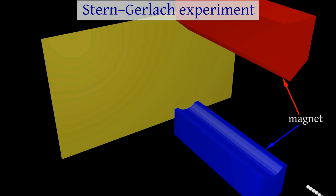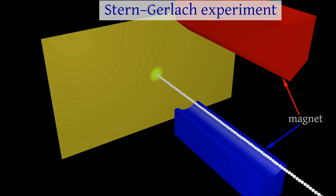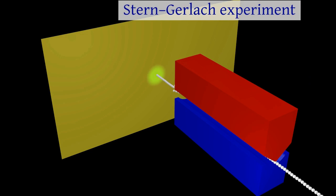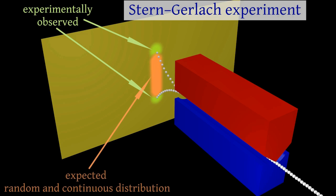This experiment involves sending a beam of particles through an inhomogeneous magnetic field and observing their deflection. The result of the experiment was rather unexpected. The particles passing through the Stern-Gerlach apparatus are deflected either up or down by a specific amount, while they expected a random and continuous distribution.